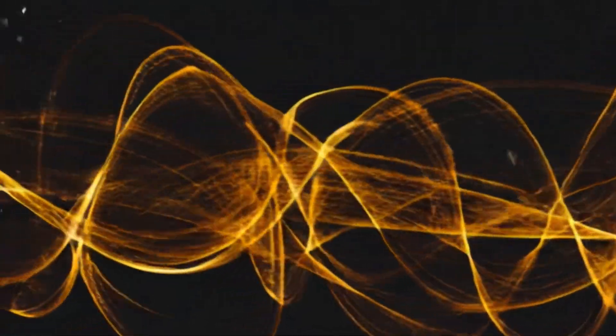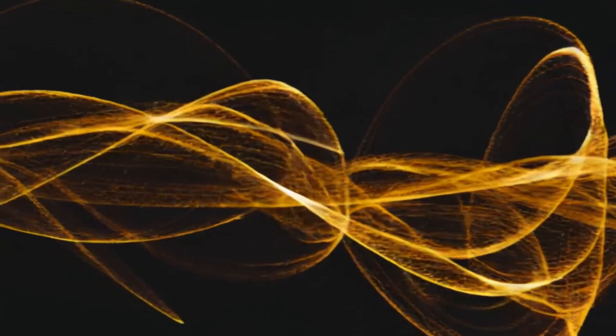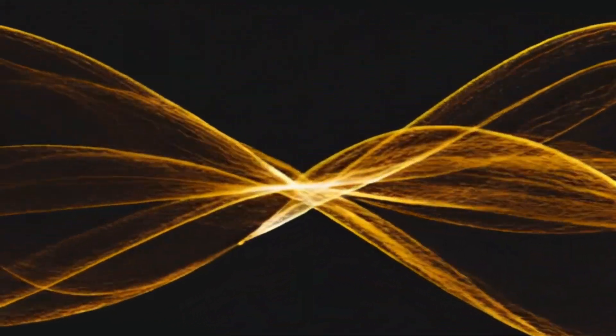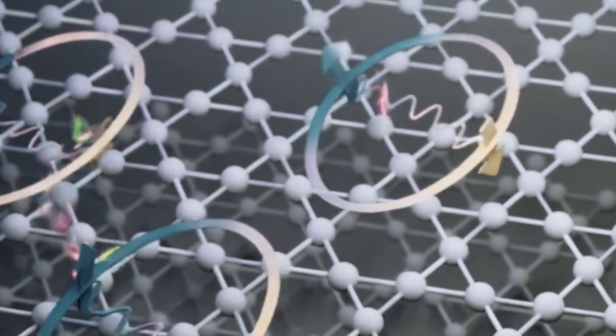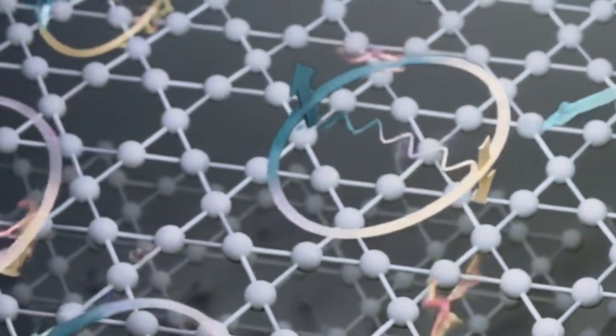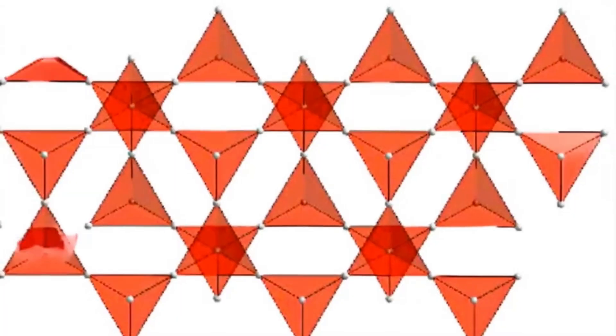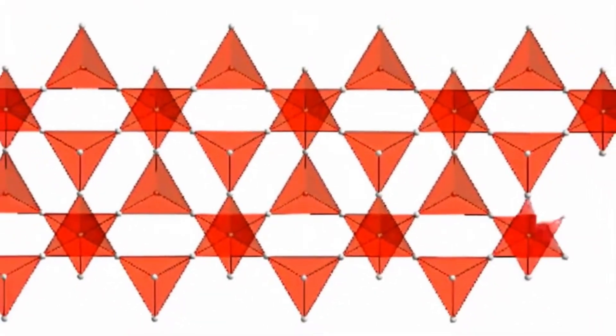It's not just beautiful, it also creates a playground for electrons to do strange, wonderful things. Physicists love it because it can host exotic quantum states that defy classical explanation. But here's the key. The kagome lattice is supposed to be symmetrical. No left, no right, no hidden hand.